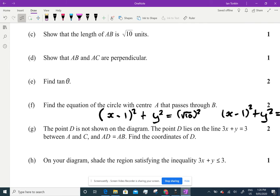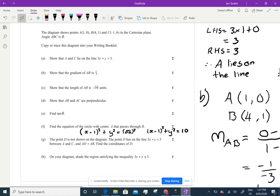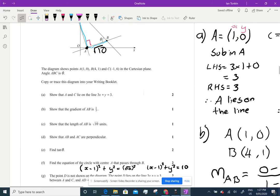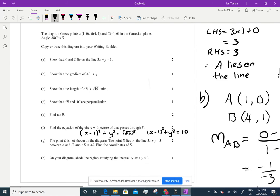The point D is not shown on the diagram. The point D lies on the line 3x plus y equals 3, between AC and AD equals AB. So, let's have a look at the diagram. The point D lies on the line 3x plus y between A and C. Now, we don't know where it is. So, you put it there somewhere, that's D. But you know that this distance is root 10. Why? Because that and that are equal.